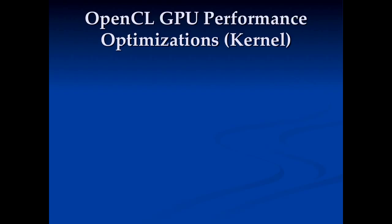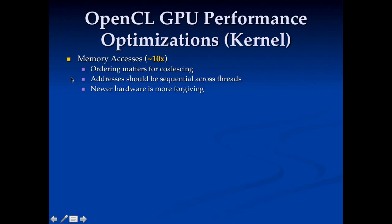How about optimizations for the kernel itself? The first one is memory accesses. Memory coalescing is very important for performance — you really want to optimize your code for that on the GPU. Newer hardware is much more forgiving and does a better job of coalescing, but the more easily your accesses coalesce, the better performance you'll get.